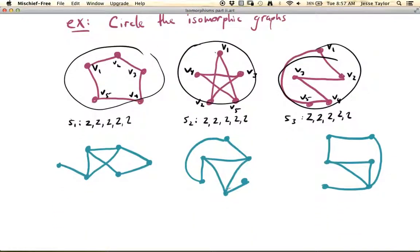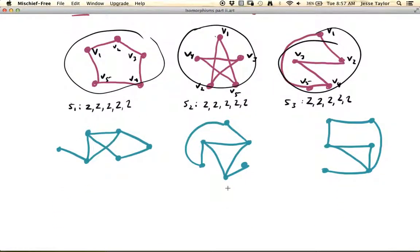Okay, so now let's look at one that's maybe slightly more complicated, this example down here. Okay, so again, we want to think about the degree sequence first. Okay, so 1, 3, 3, 3, 2, 2.